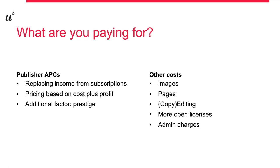So when you pay an APC, you pay for the effective costs, the profit margins, and the prestige. As the margins are in some cases very high, it is worth considering costs before submitting a manuscript. Sometimes even supplementary costs are added to the APCs, for example for images or supplementary pages. And sometimes you are charged if you want to publish under a CC BY license instead of the CC BY-NC license that is proposed by the journal.